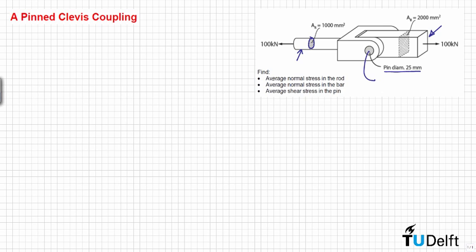Then we need to find what is the average normal stress in the rod, what is the average normal stress in the bar, and what is the average shear stress in the pin.